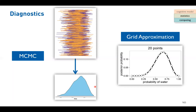We don't need to focus on that. We get technically the same results from both MCMC samples and from grid approximation.